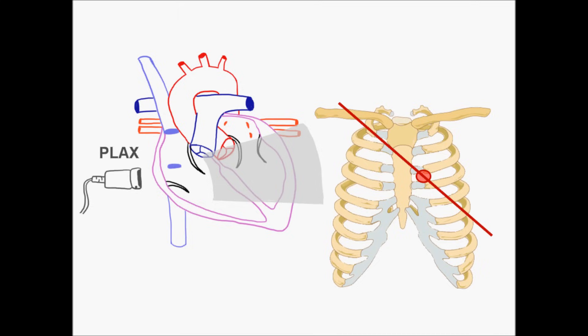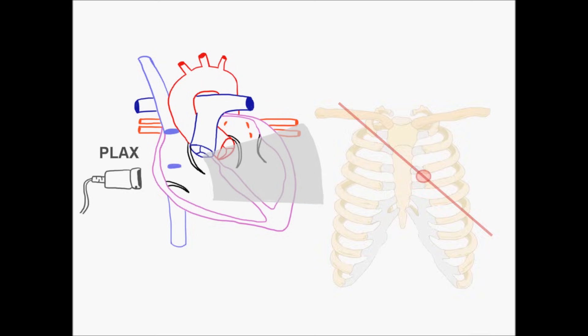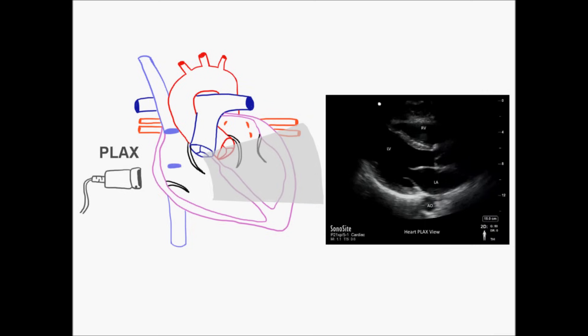We use the phased array probe in cardiac mode, placing the probe at the left sternal border in the third to fifth intercostal space, and orienting it along the long axis of the heart, which runs between the right shoulder and the left hip. Place the probe indicator opposite the screen marker, and you'll get a view showing the right ventricle, the left atrium, the mitral valve, the left ventricle, the left ventricular outflow tract, and the aortic valve.